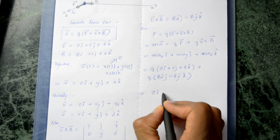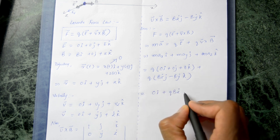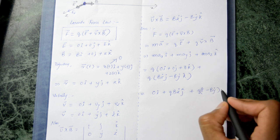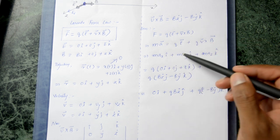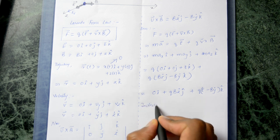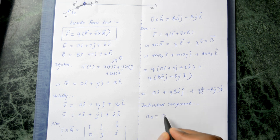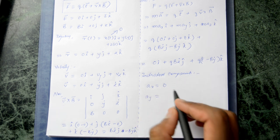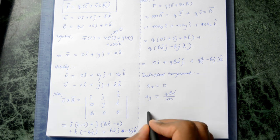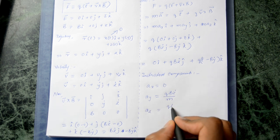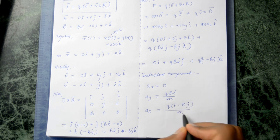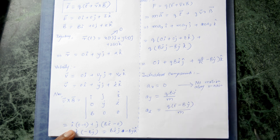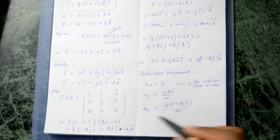From Newton's second law, comparing components: the acceleration along the x-axis is 0, as expected. The acceleration along the y-axis is a_y = qBż/m, and the acceleration along the z-axis is a_z = q(E − Bẏ)/m. Since the acceleration along x is zero there is no motion along the x-axis, so we need to study only these two coupled equations for y and z.